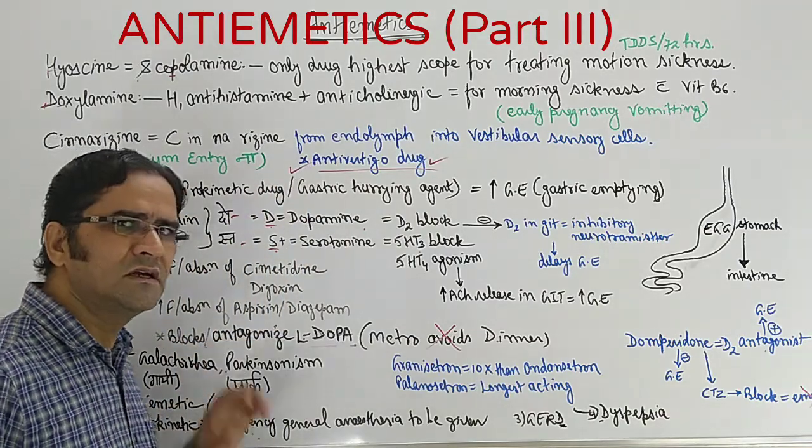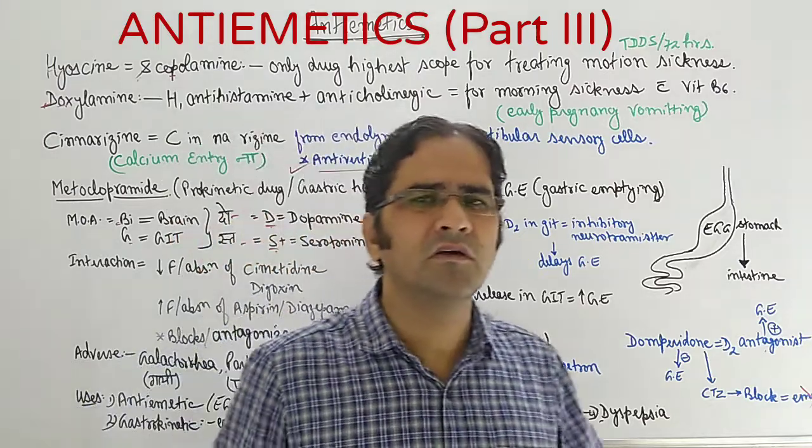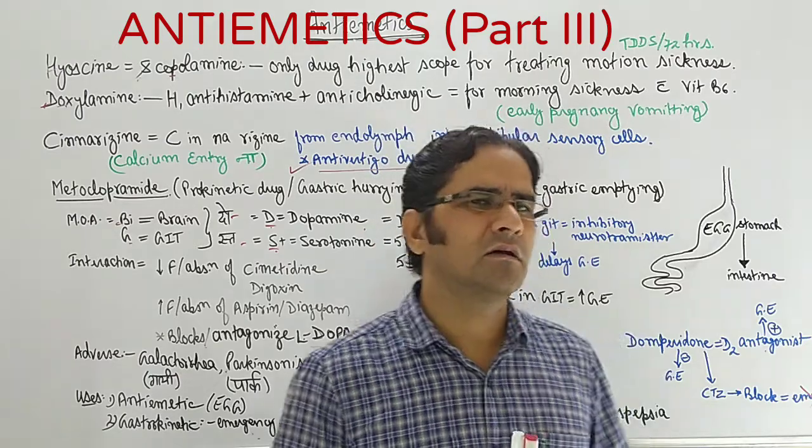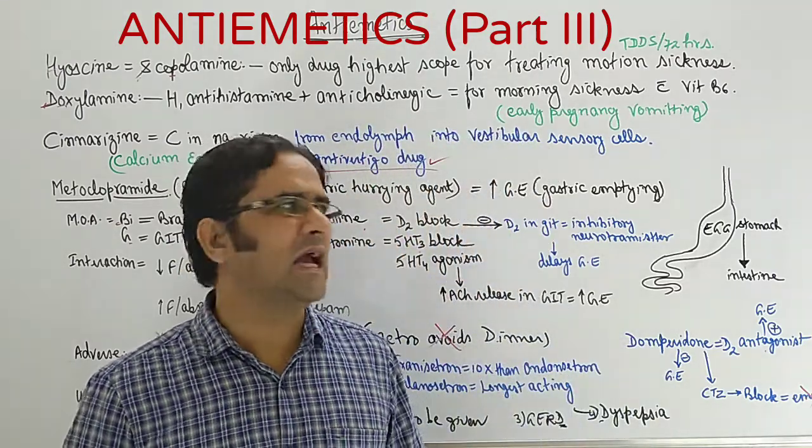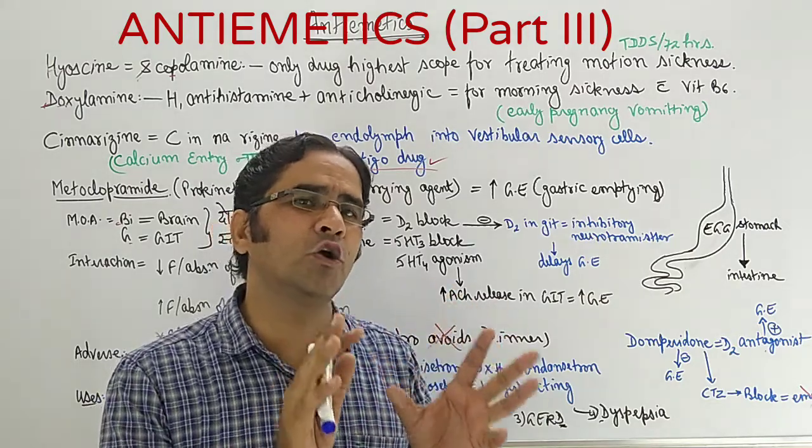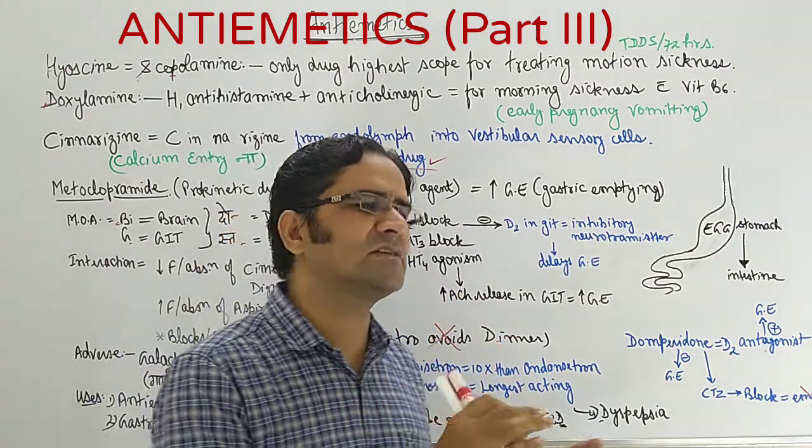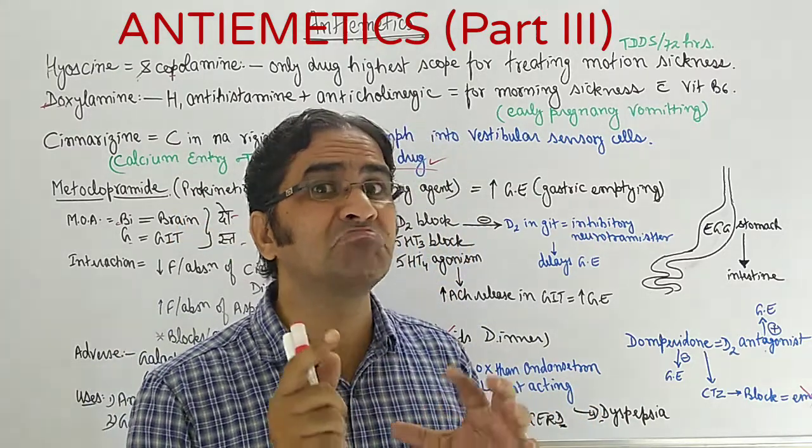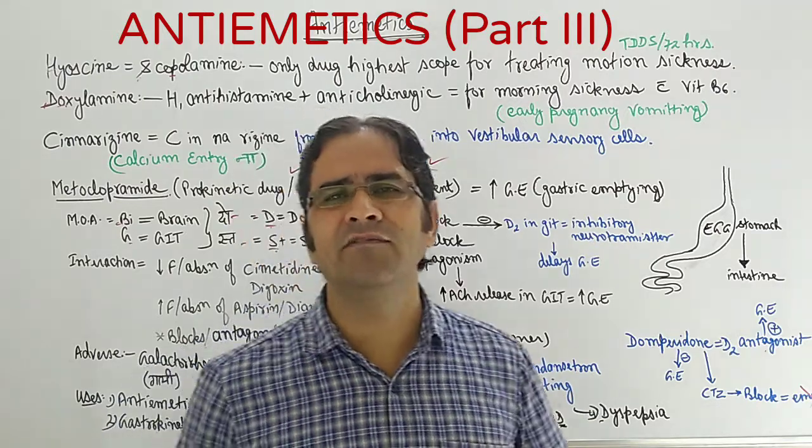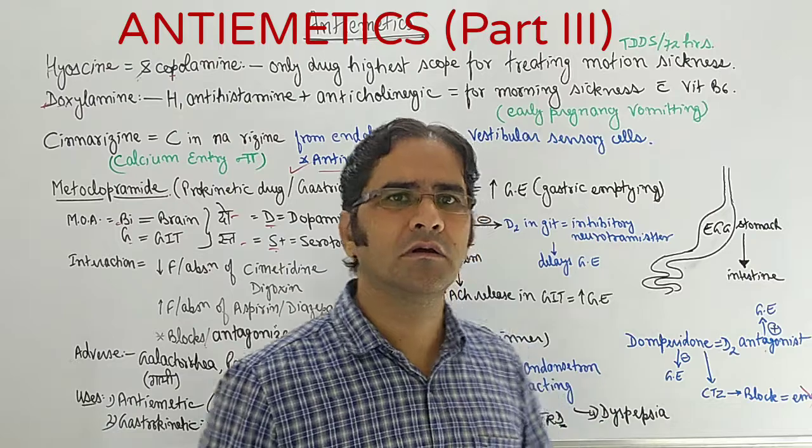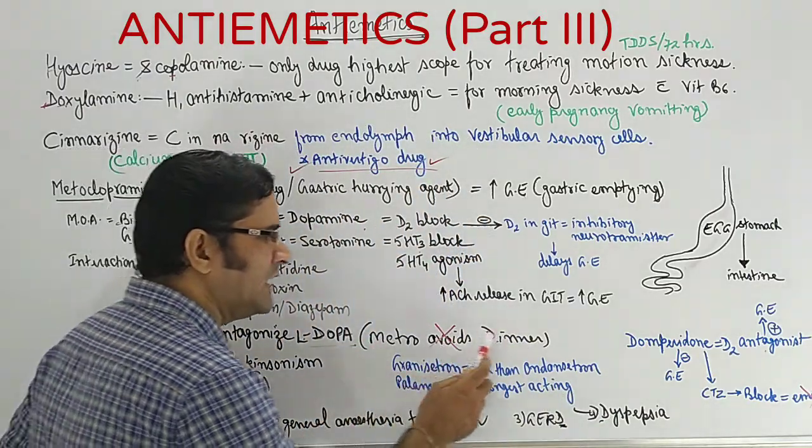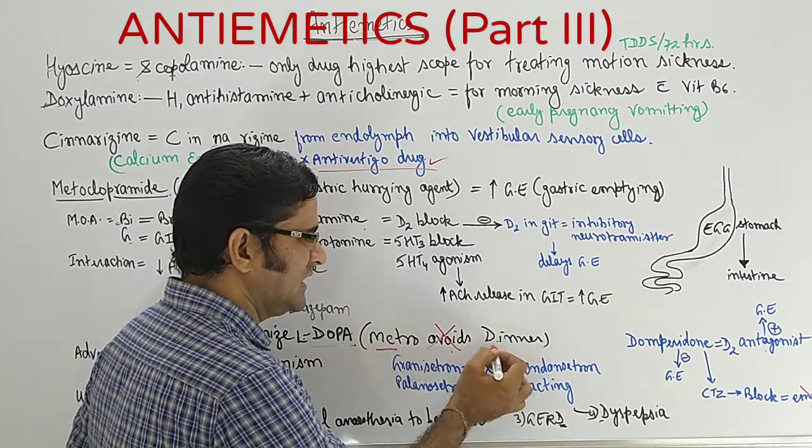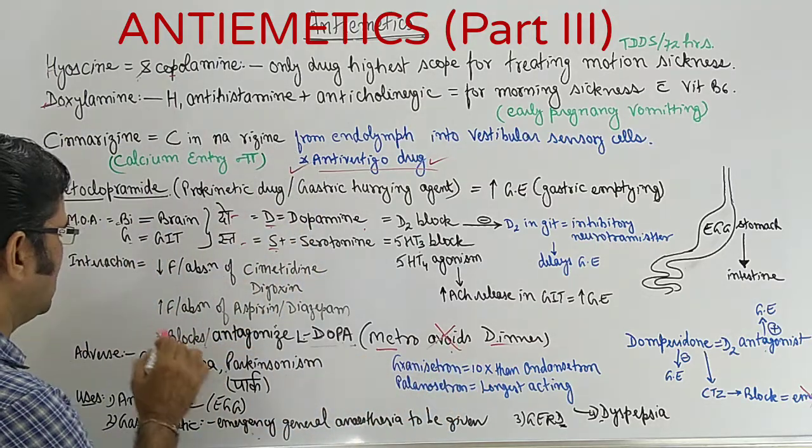One more important question about drug interaction: for metoclopramide, we used one mnemonic in first and second video. The drugs which are present in the stomach have to be moved down. We are using a dome-shaped drug, the patients are sitting, all the dome-shaped. The name of drug is 'meto' but we're talking about metro. We know in metro, eatables are not allowed. Yes, metro avoids dinner - you cannot take dinner in metro. So metro antagonizes D - D means dopamine. Metoclopramide blocks or antagonizes the action of levodopa.